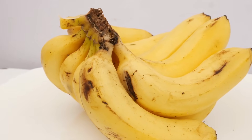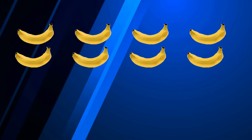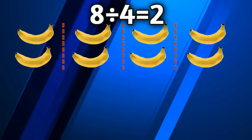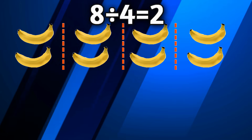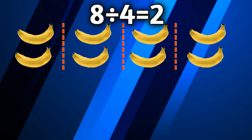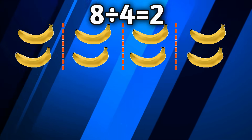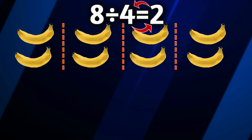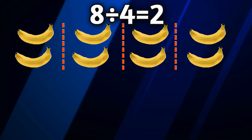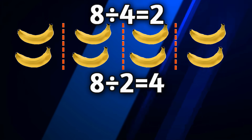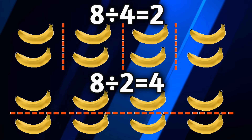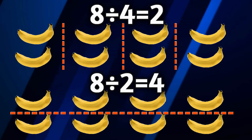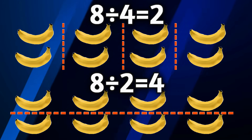Bananas are so tasty. We have eight bananas here. Eight divided by four equals two — dividing the eight bananas into four groups means each group has two bananas in it. Now, if we flip the four, which is the divisor, and the two, which is the quotient, it remains true. So eight divided by two equals four. If we divide the eight bananas into two groups, we see there are four bananas in each group. That's pretty awesome.